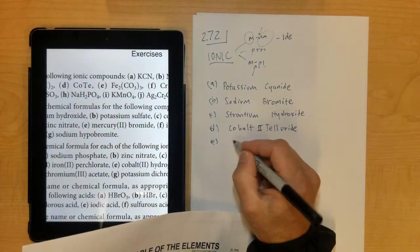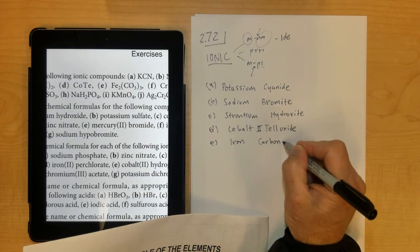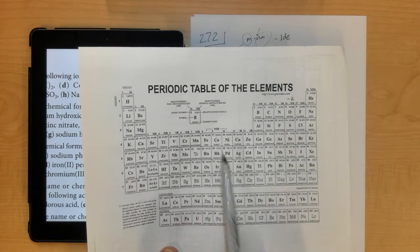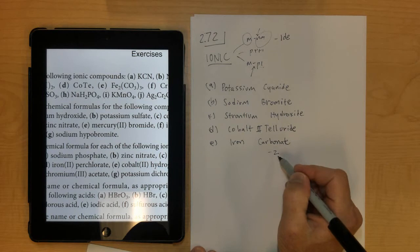Letter E, iron, and then CO3 is the polyatomic ion carbonate, and iron is not in group 1 or group 2, so it's definitely going to need a Roman numeral. Look up carbonate on the back if you don't have it memorized. It's negative 2.